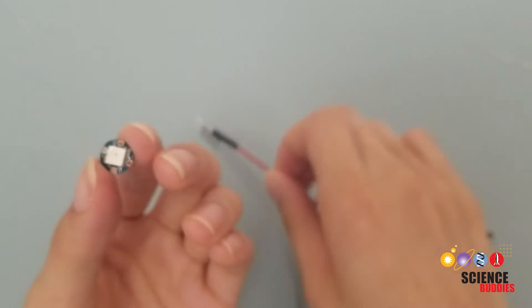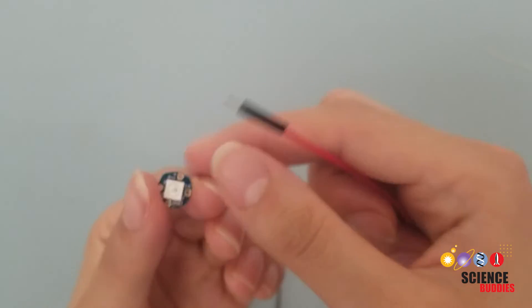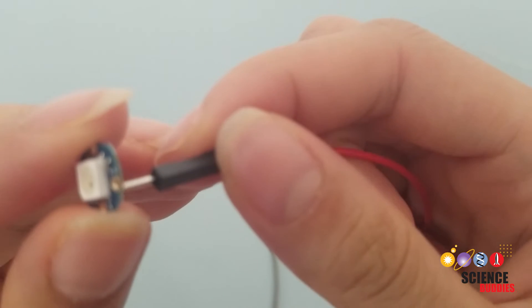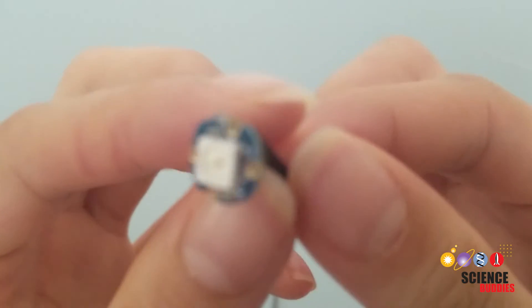Next, you will prepare connections to your RGB LED. Note that in some sewable circuit projects, you can use conductive thread for all the connections. However, in this project,